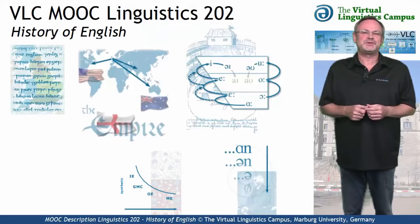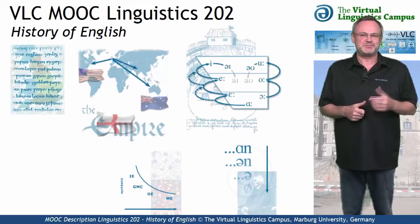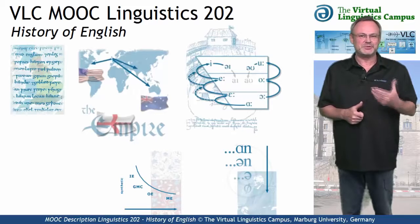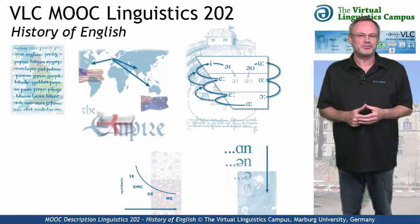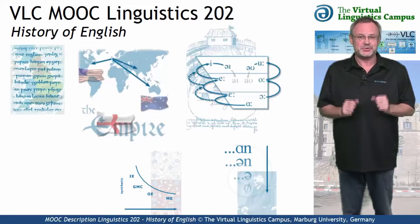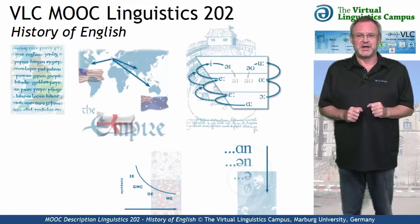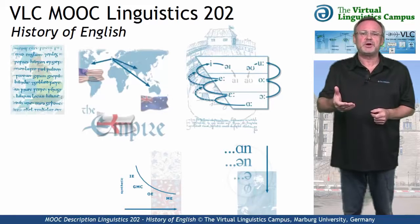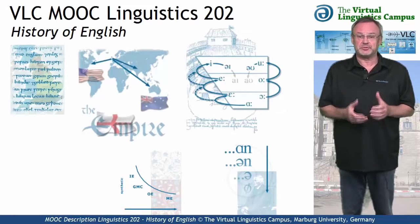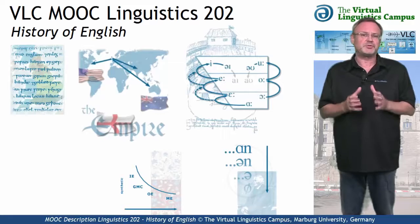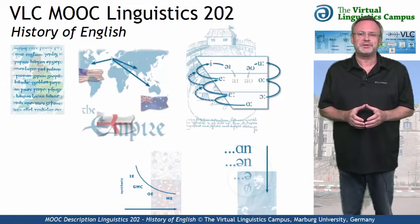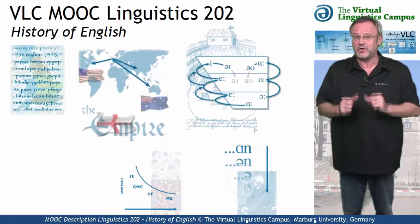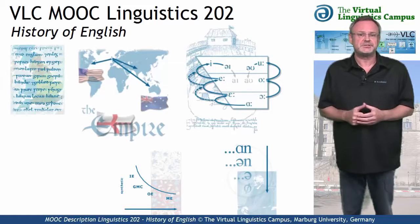Welcome to the Virtual Linguistics Campus PMOOC, Linguistics 202, History of English — our permanent free online offer for everyone who is interested in the development of English from Proto-Indo-European and before until today.